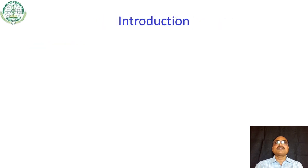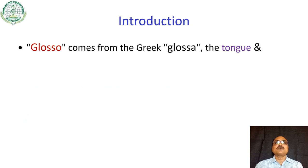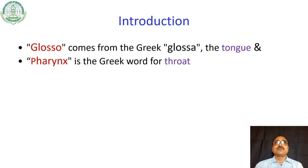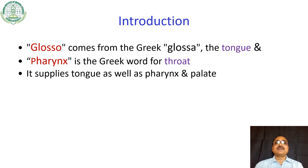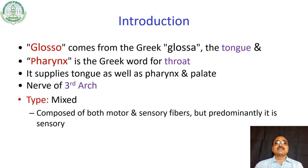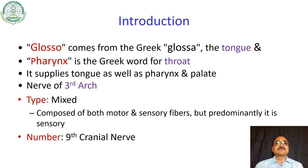The term glossopharyngeal nerve comes from the Greek word 'Glossa,' which means tongue, and 'pharynx' is the Greek word for throat. It supplies the tongue as well as pharynx and palate. It is the nerve of the third arch. The type of nerve is mixed, meaning it is composed of both motor and sensory fibers, but predominantly it is sensory. Cranial nerves are numbered from 1 to 12, and the glossopharyngeal nerve is the ninth cranial nerve.